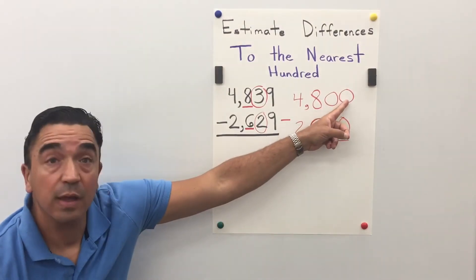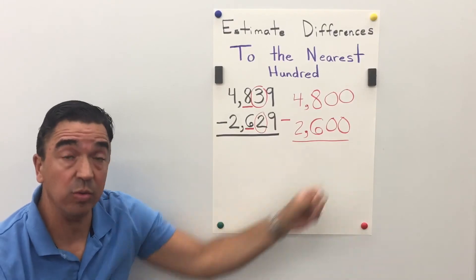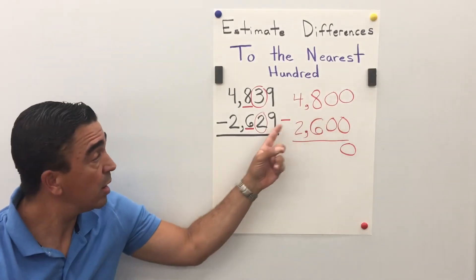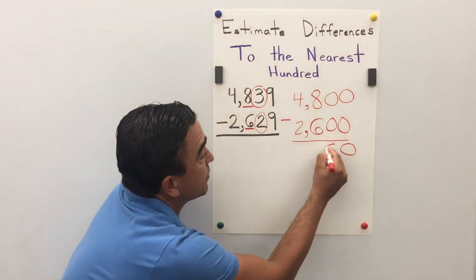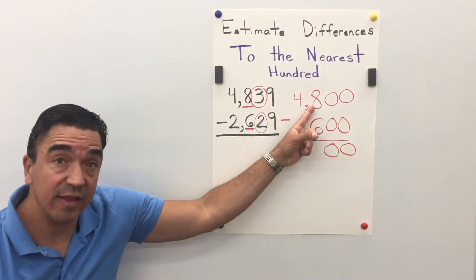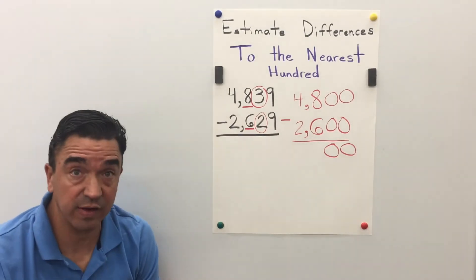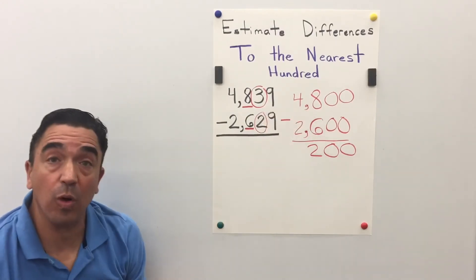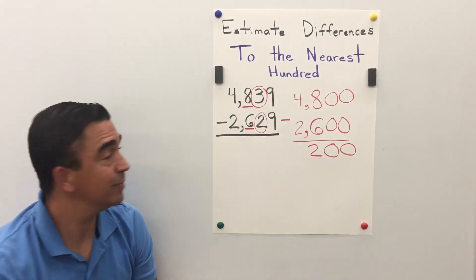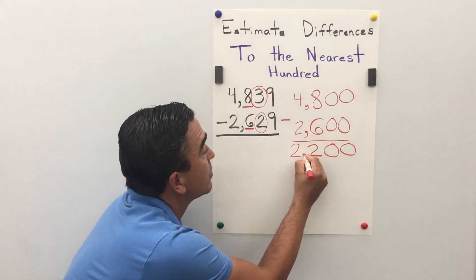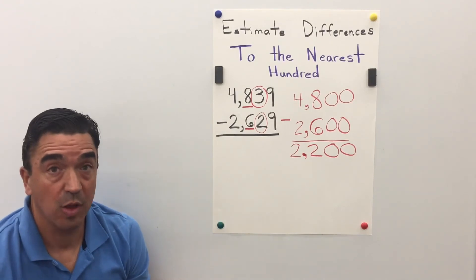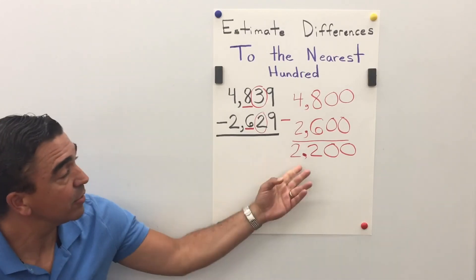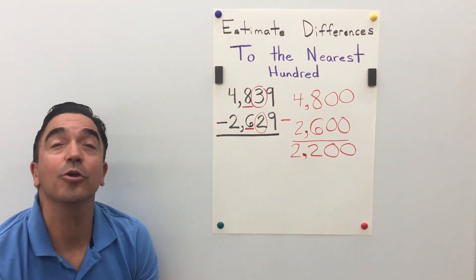Zero minus zero is zero. Zero minus zero is zero. Eight minus six is two. And four minus two is two. So when we estimate this problem to the nearest hundred, we get a difference of 2200.